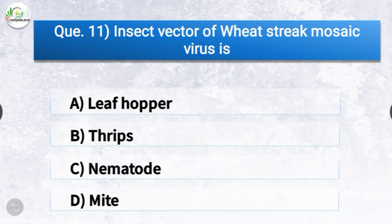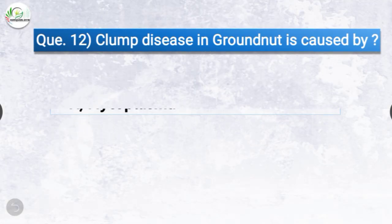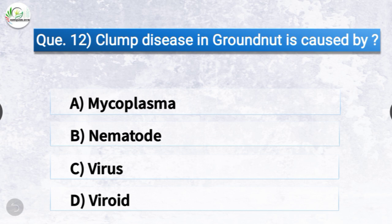Question number eleven: Insect vector of wheat streak mosaic virus is dash. The options are leafhopper, thrips, nematode, or mite. The correct answer is option D, mite. The insect vector of wheat streak mosaic virus is mite.